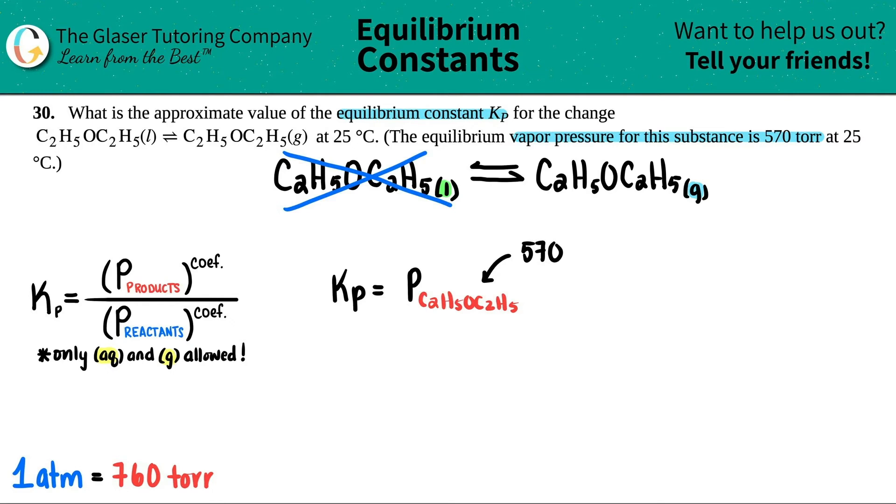But here's the thing: if you're using Kp, if you have values that you're going to plug in here, only atm units are allowed. You cannot use torr values. The thing is, I have to convert 570 torr into atm because the Kp only allows atm units. So I wrote down the conversion over here: 1 atm equals 760 torr.